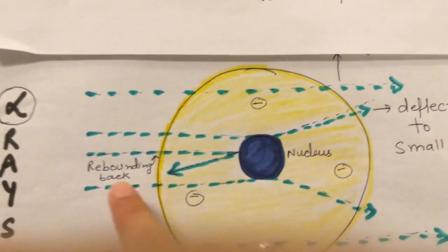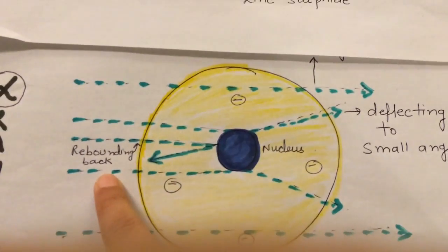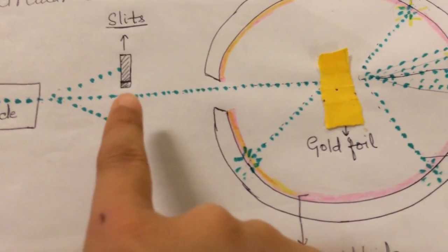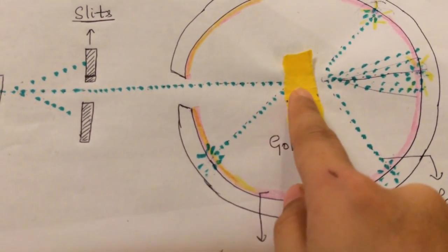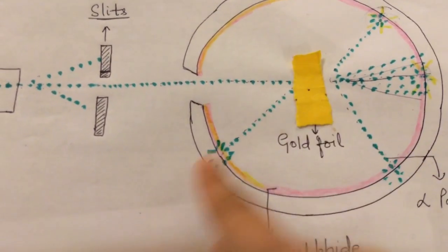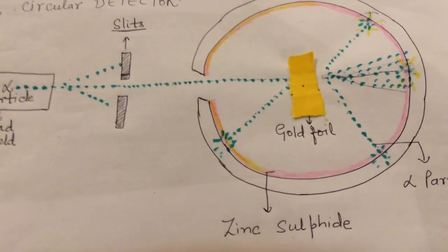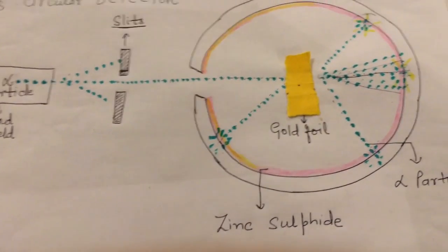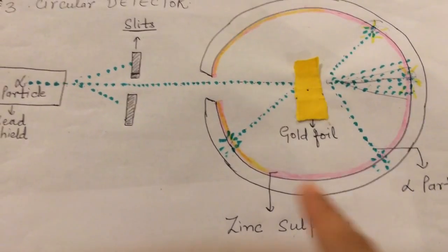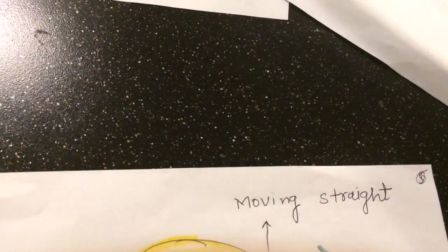The third observation was that very few alpha particles rebounded back entirely. In the diagram you can see that after striking the gold foil, these particles did not pass through — they simply rebounded back. This was a surprising and unexpected result. They were expecting only small deflections, so this complete rebound was very surprising.